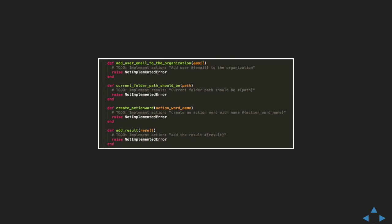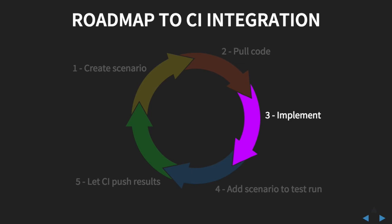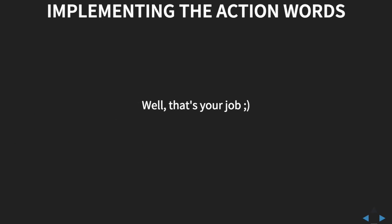Before running the tests, we have to implement the action words, otherwise the tests will just fail because there are exceptions raised inside the action words. The implementation part will be a bit short, because first that's your job and we can't really provide guides on this part. It will mainly depend on the kind of application you are testing, the language and framework you use, and the way you want to test it — whether via the browser, directly via the API, or directly via the code.